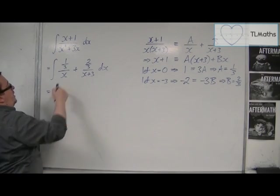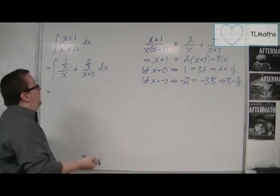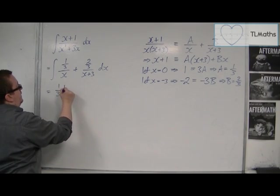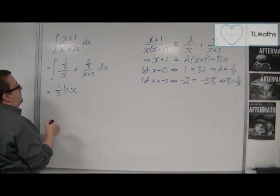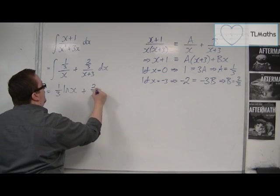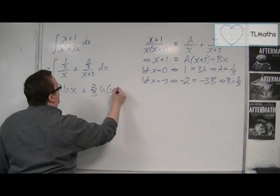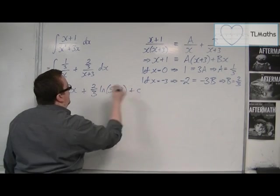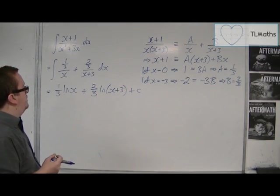Because 1 over x integrates to log x. So 1 third over x is just 1 third ln x. And here we're going to have 2 thirds ln x plus 3. And we've got that plus c constant of integration.